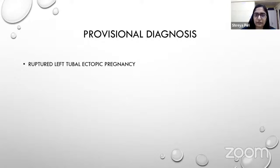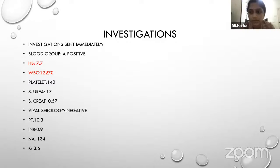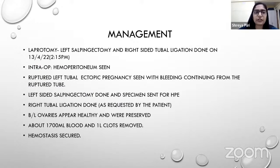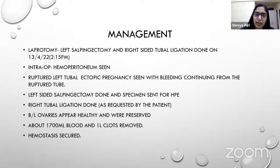Provisional diagnosis: ruptured left tubal ectopic pregnancy. Investigations: hemoglobin was low at 7.7 g/dL; WBC count mildly elevated at 12,270; all other parameters within normal limits. Management: laparotomy was performed. Left salpingectomy was done; right-sided tubal ligation was done at patient's request. Intraoperatively, hemoperitoneum was found; ruptured ectopic pregnancy was seen with continuing bleed from the ruptured tube. Specimen sent for histopathology.